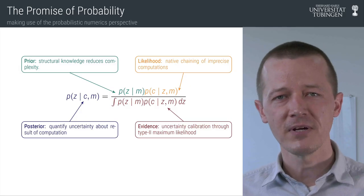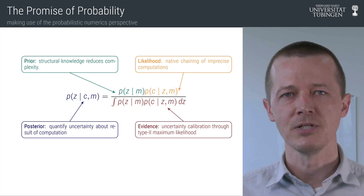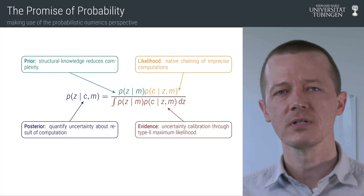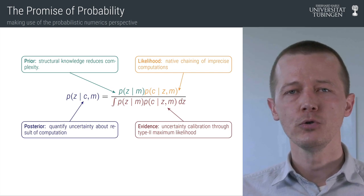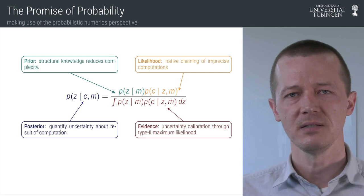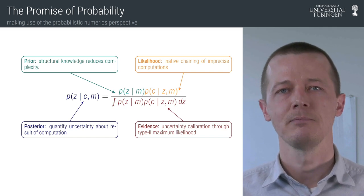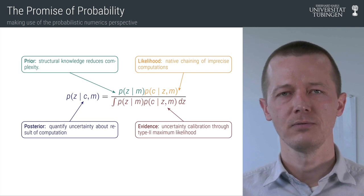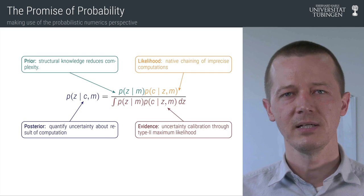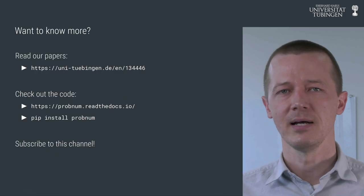Isn't that cool? That means we can phrase computation as multiplying a prior with a likelihood and dividing by the evidence, returning a posterior — as Bayesian inference. Why is this useful? It's useful because it allows us to use the toolbox of Bayesian machine learning within computation. We can use the prior to encode what we know about our numerical problem to reduce its complexity. We can use the likelihood to tell the algorithm that some of our computations might be a bit unreliable — it might be stochastic, it might be low numerical precision. We can use the evidence as a generic framework to estimate hyperparameters of numerical algorithms, and we can use the output of this process — the posterior — to quantify uncertainty about the result of the computation and hand it forward to whatever comes next in our computational pipeline.